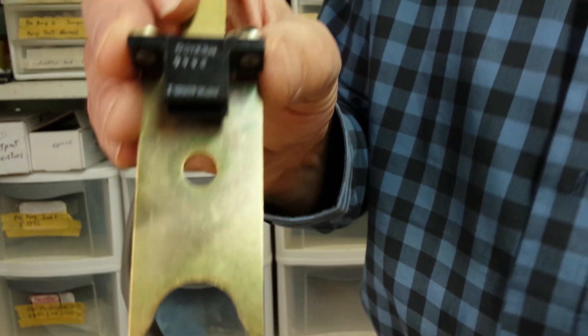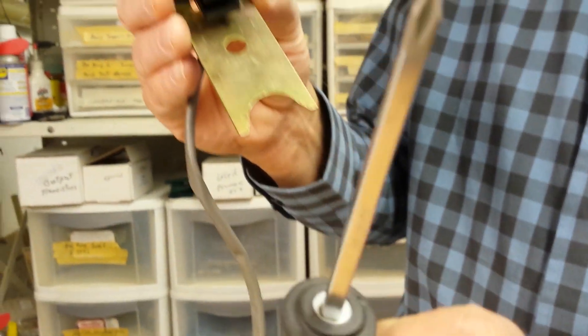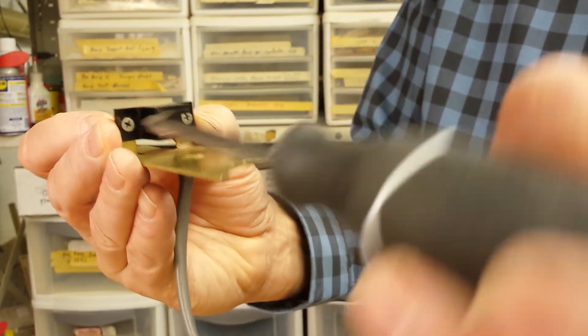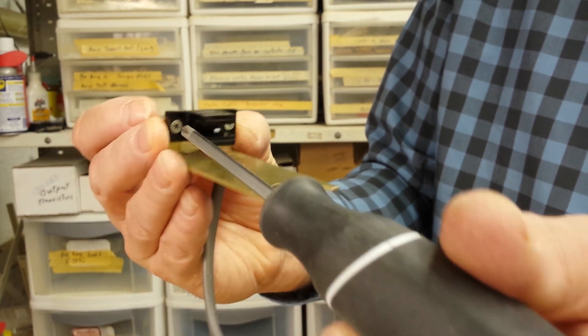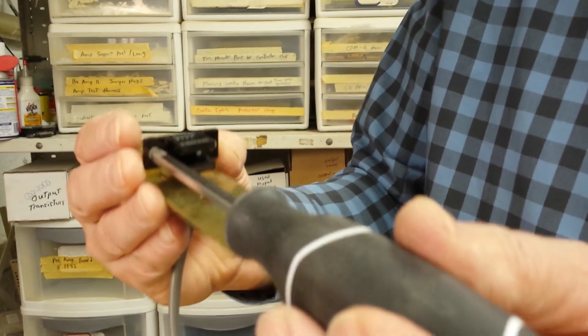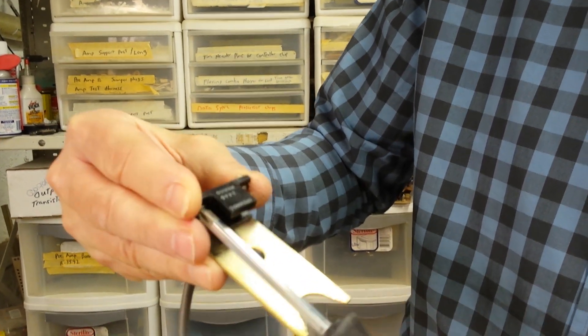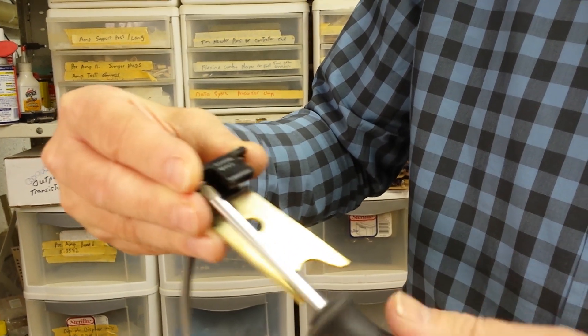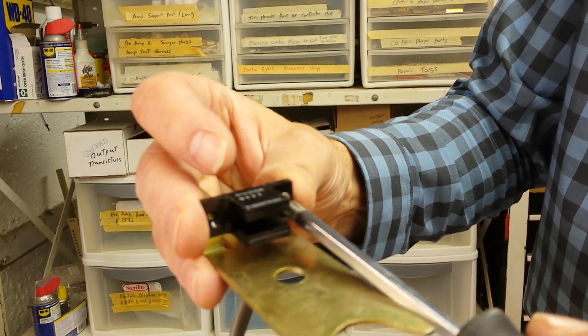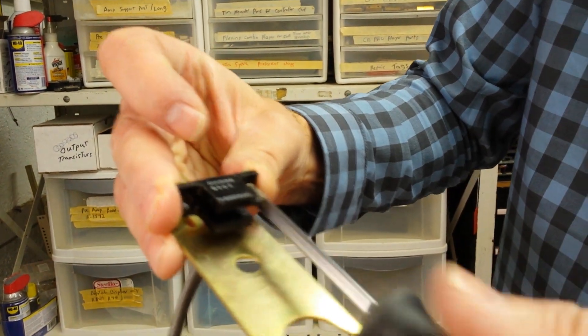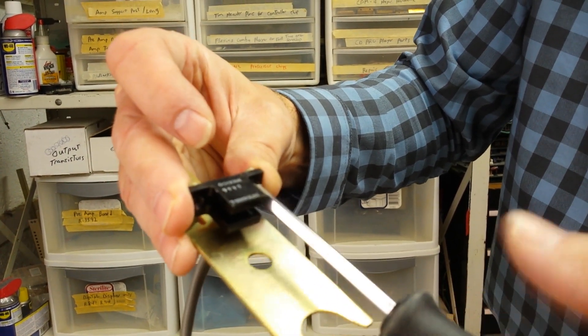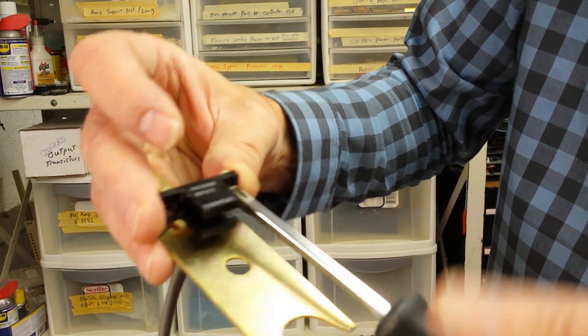The next thing you're going to need is a number one Phillips screwdriver and the actual housing has two flat head, pin head Phillips screws. So we're going to remove the screws, there's one, and there's two.